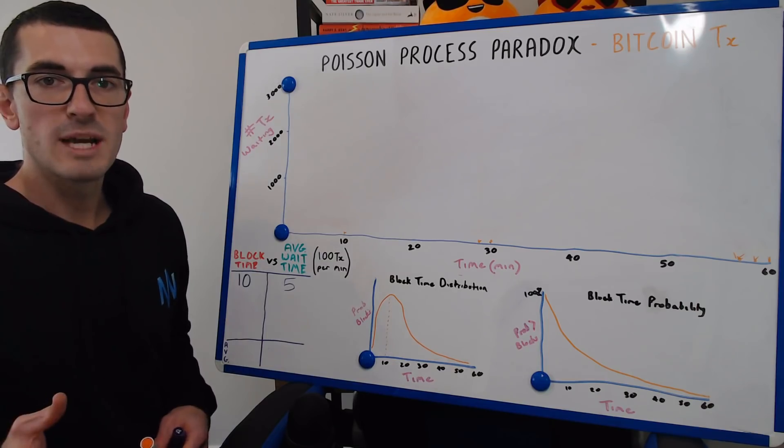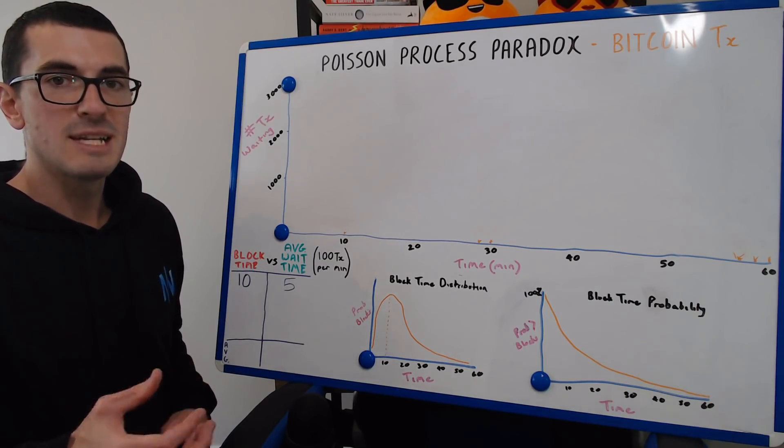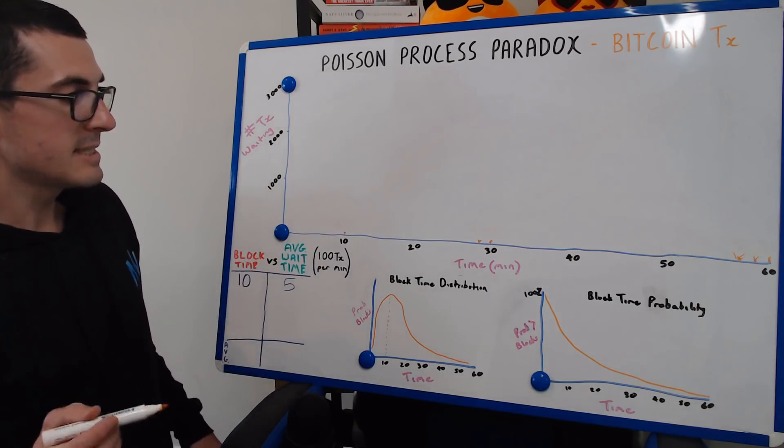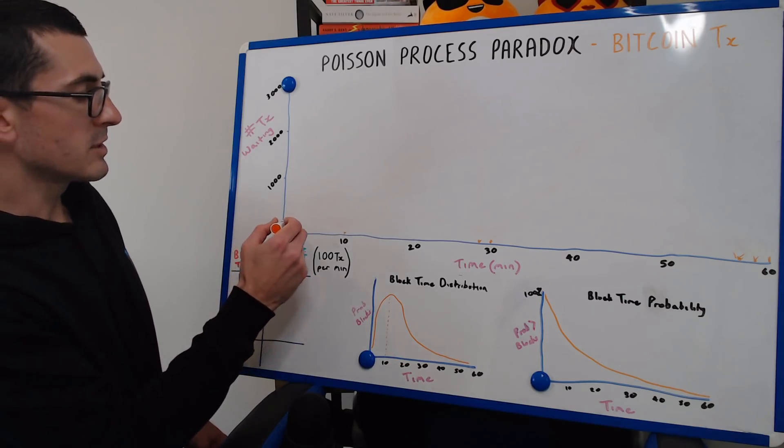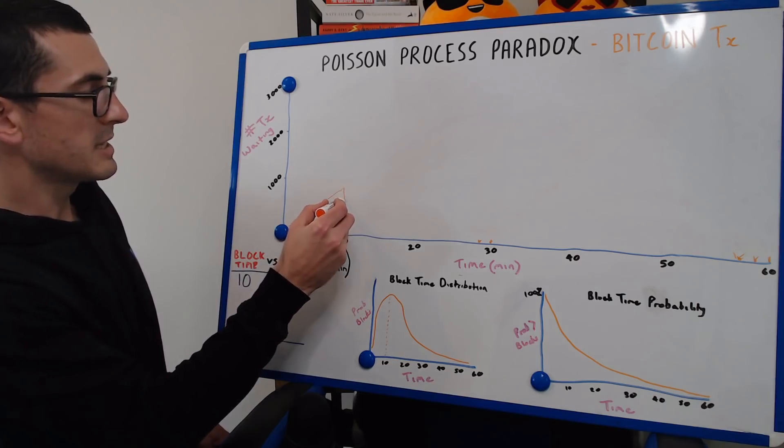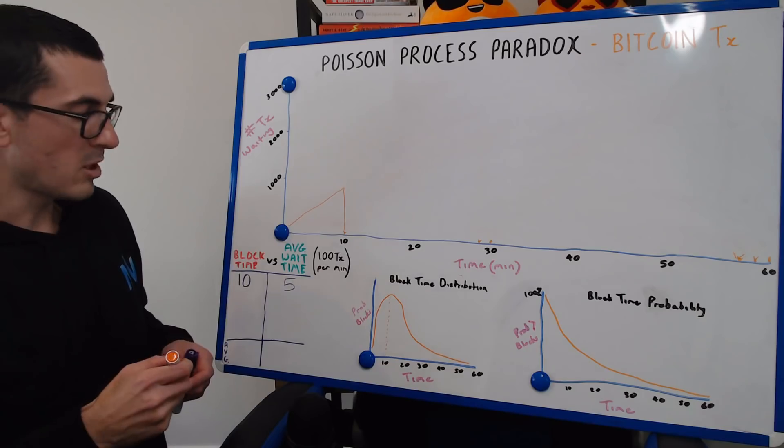So in a perfect world, if the first block takes exactly 10 minutes to mine, we've got those 100 transactions per minute creeping into the network, and then at that 10-minute mark we've had exactly 1,000 transactions that are included in the next block.